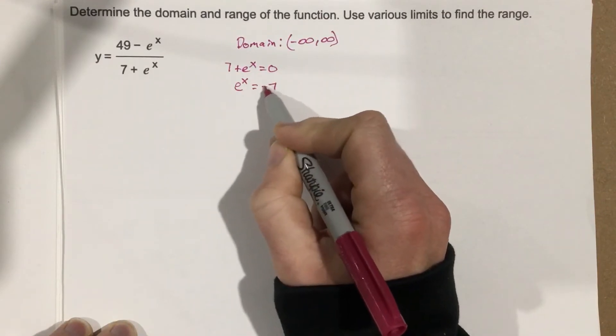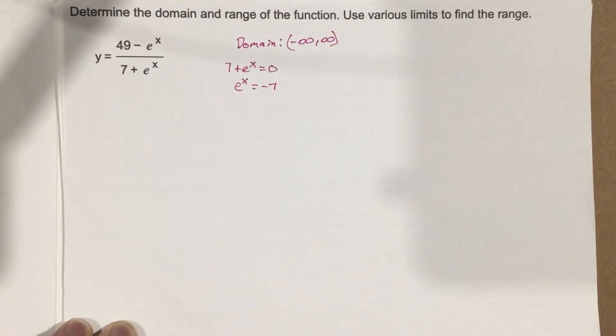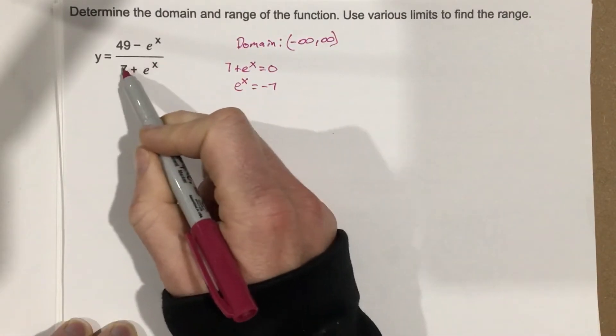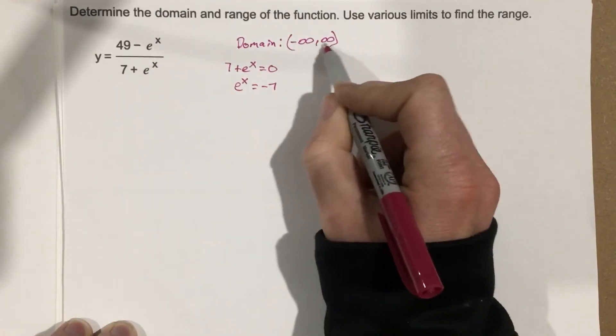You're not going to be able to because you can't take the natural log of a negative number. And so that tells you that there's no way you can get 0 in the denominator for this rational function. So that's why the domain is negative infinity to infinity.